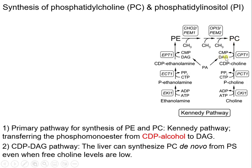Diacylglycerol, or DAG, is derived from PA. Similarly, ethanolamine can be converted to PE through the Kennedy pathway. PE is then converted to PC by the addition of three methyl groups.